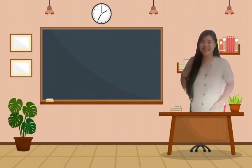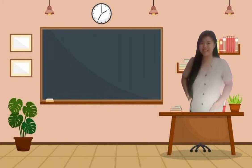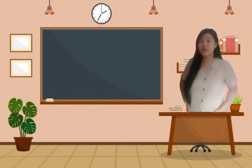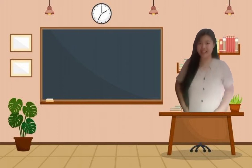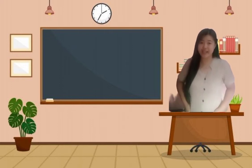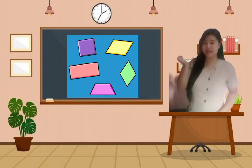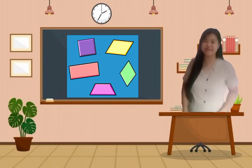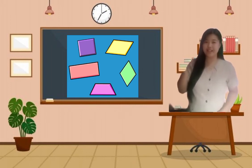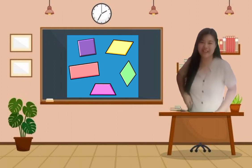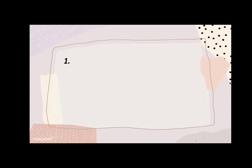Okay class, now are you ready for your quiz? Yes, ma'am. Very good. Now bring out a piece of paper and a ballpen. Just write down on your paper if the correct answer is square, rectangle, trapezoid, rhombus, or parallelogram.